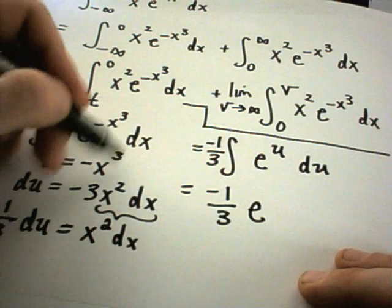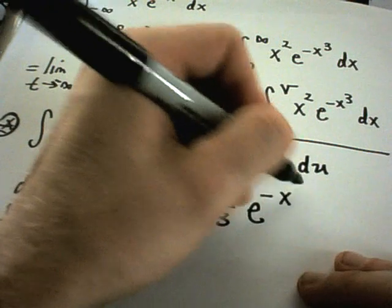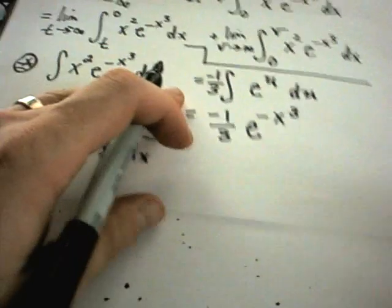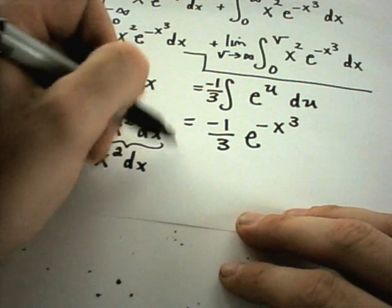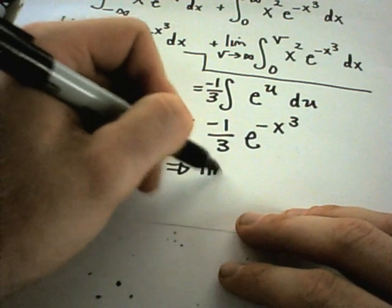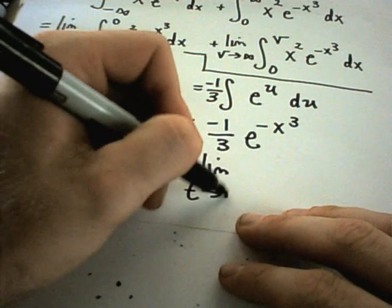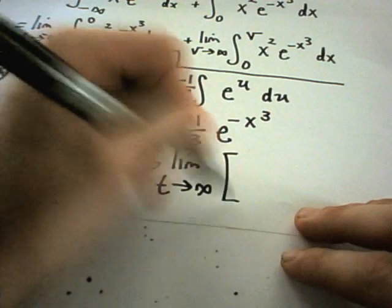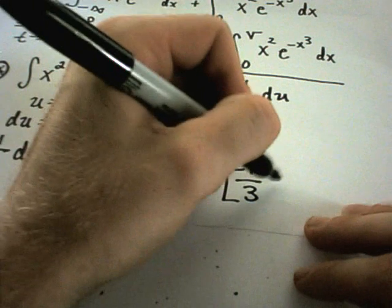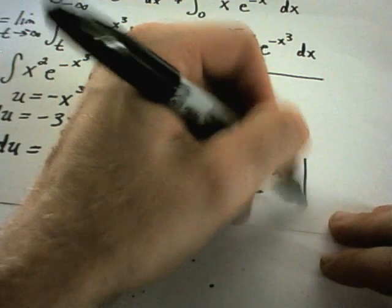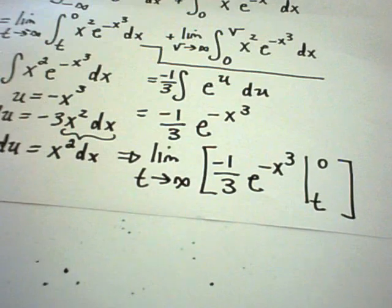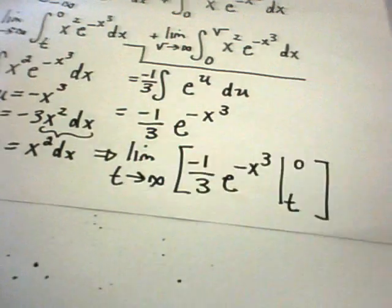So negative 1/3 du, and I'll end up getting negative 1/3 - if you integrate e to the u, hey you just get e to the u. But in this case u is negative x to the third, so if I plug all of this stuff back in I'll end up having the limit as t goes to infinity, and now I found my anti-derivative. It's negative 1/3 e to the negative x cubed from t to 0.